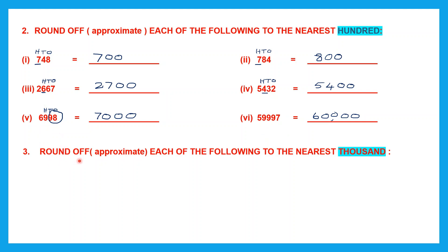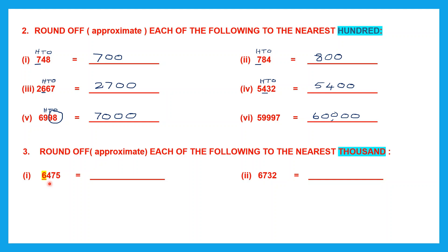Question 3: round off or approximate each of the following to the nearest thousand. Question 1: we have 6 in the thousands place which has been underlined already. The first step is to underline the digit in the thousands place and then look at the digit to its right. The digit to the right is 4, which is less than 5, so 6 will remain the same and all the other digits to its right will be replaced by 0s — there are 3 digits, so three 0s. The answer is 6,000.